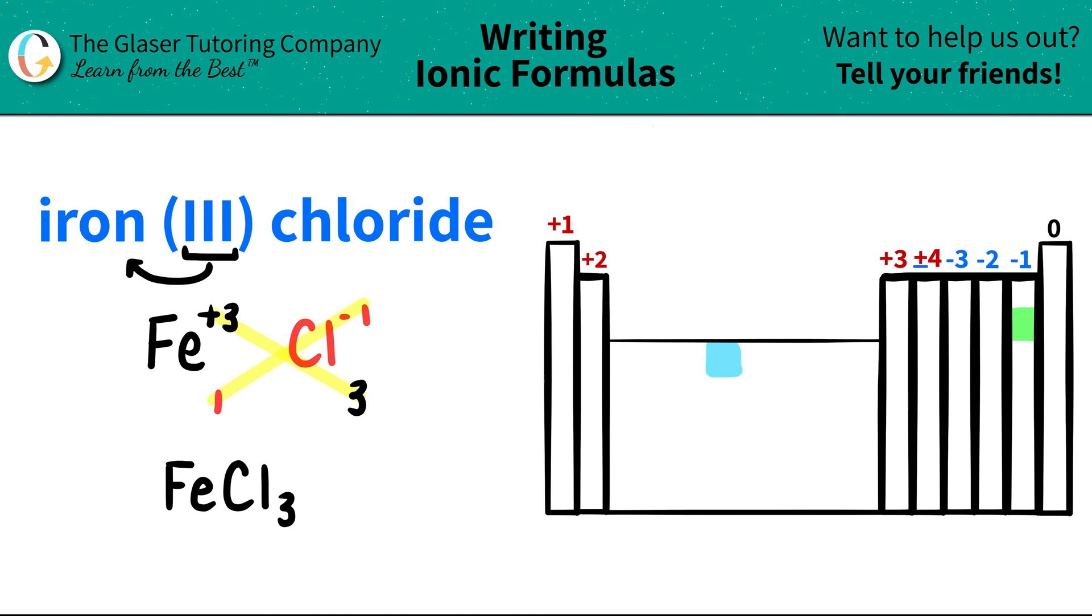And that is your final answer. So iron 3 chloride is just FeCl3.